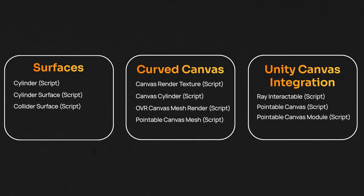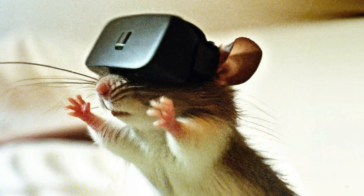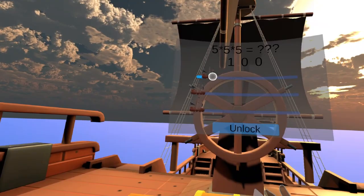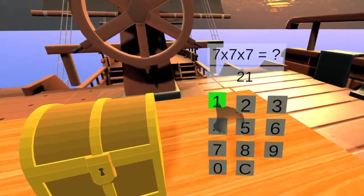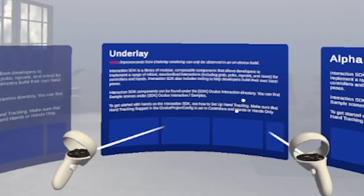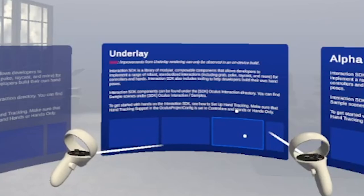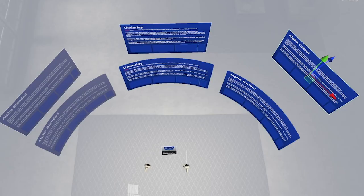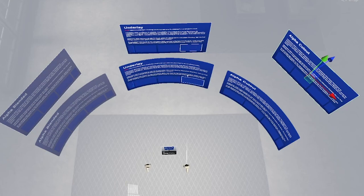The last category is the Unity canvas integration. These components allow the Oculus SDK to interact with Unity canvas. We don't have a mouse in VR to interact with the UI — instead we use ray interaction or poke interaction. The ray interactable component defines the surface of the object being ray casted against, and the pointable canvas component converts the ray casted events into Unity canvas events using the pointable canvas module component. I hope that explanation helped you get a better understanding of these components.